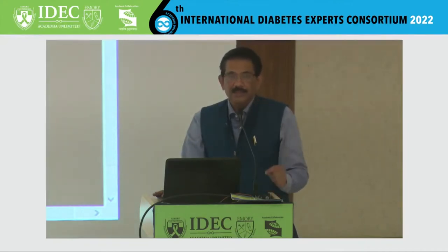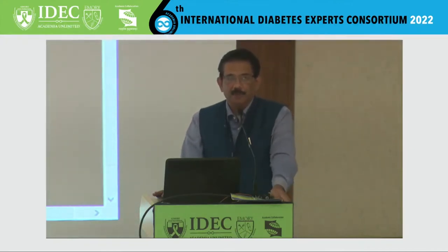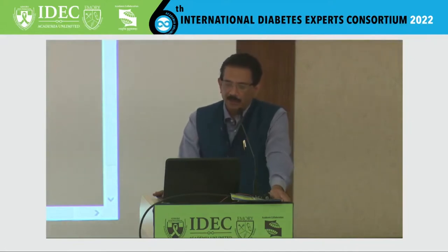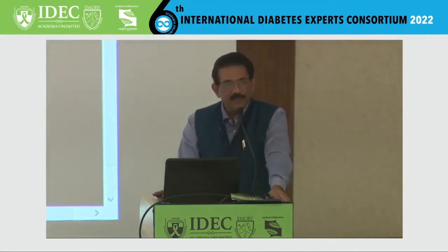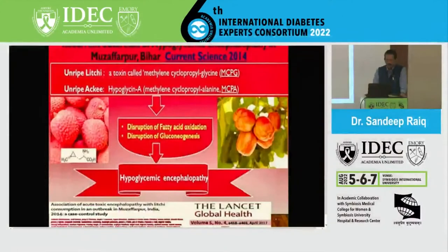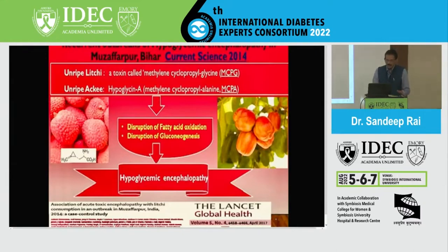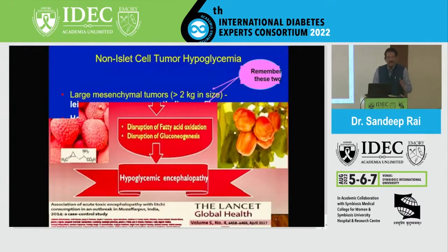This is the lychee crisis at Muzaffarpur in Bihar. In 2014, people were going into hypoglycemic encephalopathy, and it was found that unripe lychee contains a toxin called MCPG, which was causing this hypoglycemic encephalopathy. This was published in The Lancet.